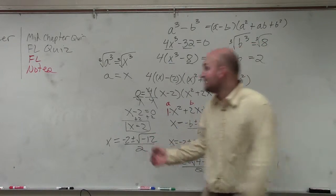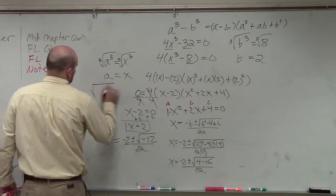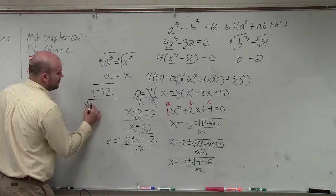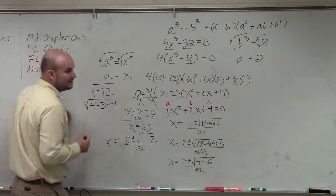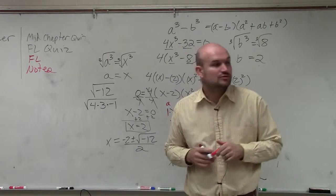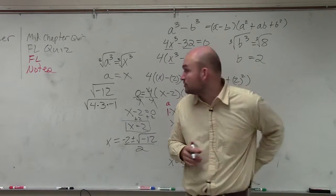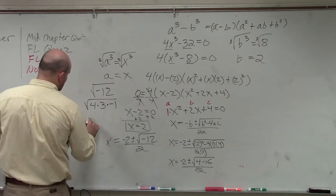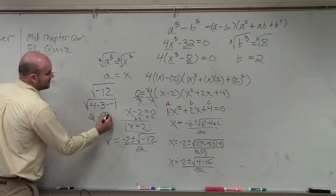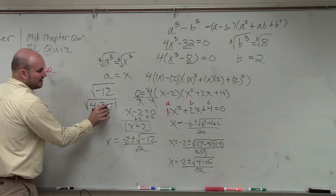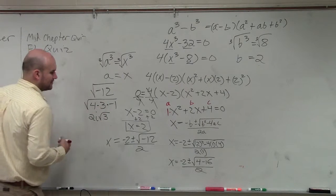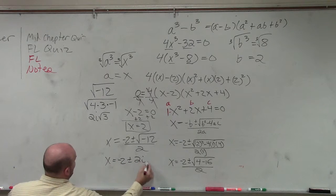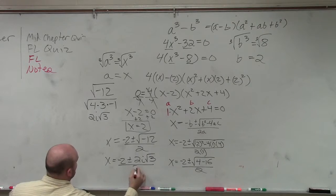Now, we've talked about simplifying negative radicals. Remember, we can break this up into 4 times 3 times negative 1. Does everybody agree with me that square root of negative 12 is the same thing as the square root of 4 times 3 times negative 1? So now, I can break this up into 2. We can't take the square root of 3, so we leave that there. And then the square root of negative 1 is i.